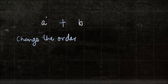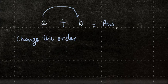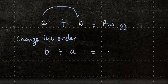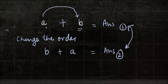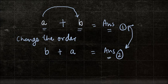This means that if I add A to B, I get the answer — let's call this answer one. But if I change the order and I add B plus A, the answer I get — let's call it answer two — will answer one and answer two be the same? Or in other words, does changing the order of addition make any difference to the result? If it does not, we say that the whole numbers are commutative for addition. If it does, we say that the whole numbers are not commutative for addition.